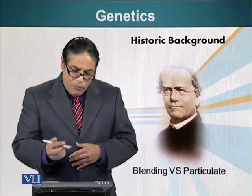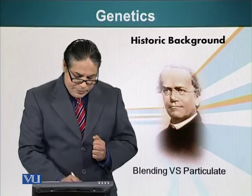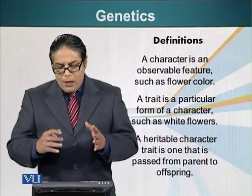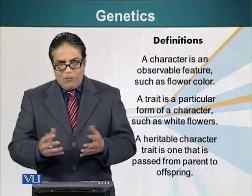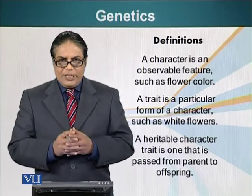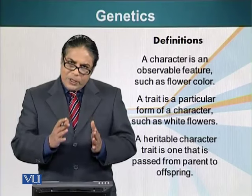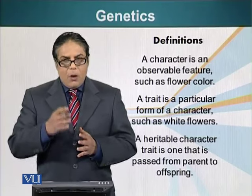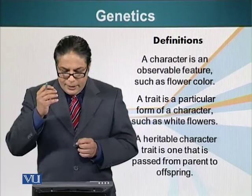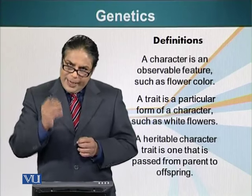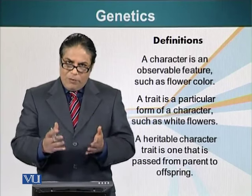Before we start talking about principles in more detail, let's clarify some definitions. A character is an observable feature — for example, the color of a flower, the height of a plant, the shape of a seed, or the color of a seed. A trait is a particular form of a character. For example, white flower and red flower are traits, while flower color is the character.